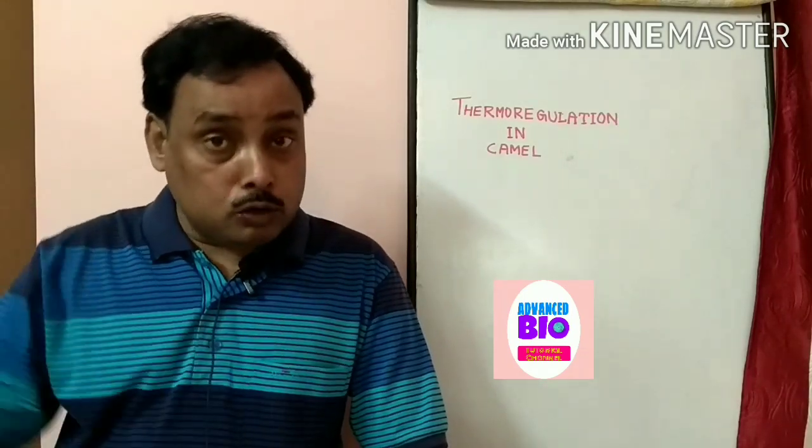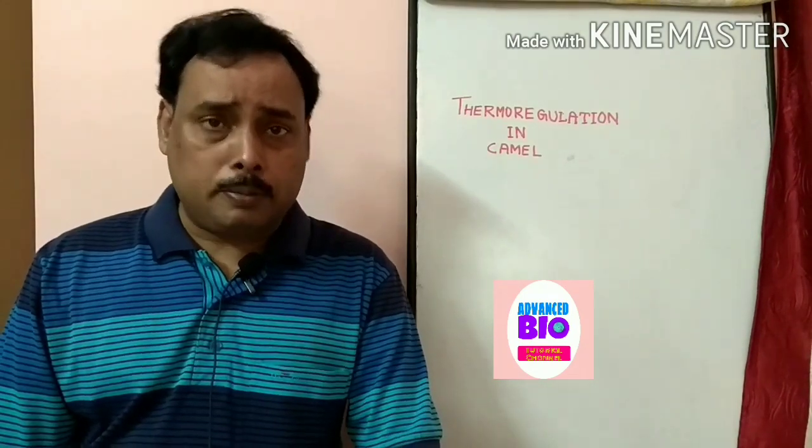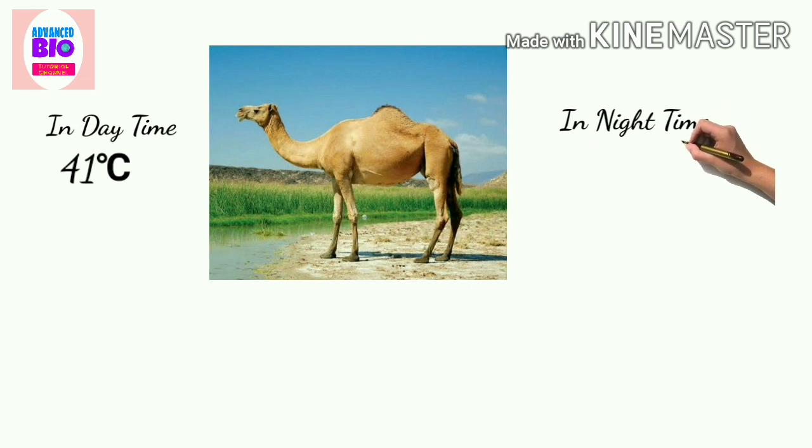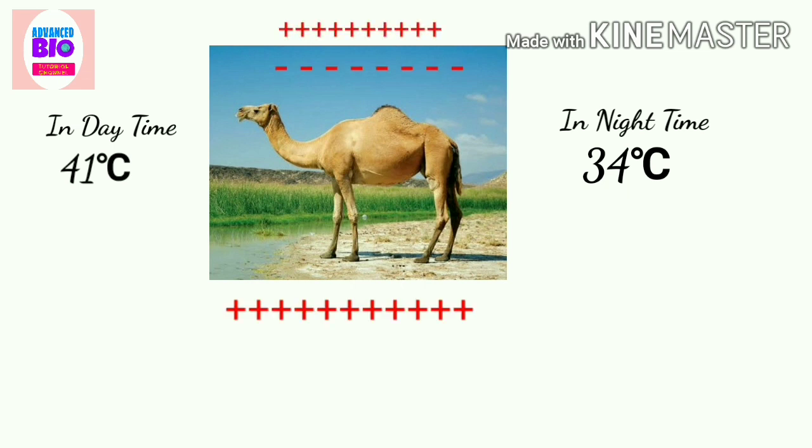Now come to the context of camel. Let's start thermoregulation in camel. Suppose this is the camel and it maintains its body temperature at 41 degrees centigrade during the daytime and almost 34 degrees centigrade over the night. And we know that the atmospheric temperature in the desert is 46 degrees centigrade on average.